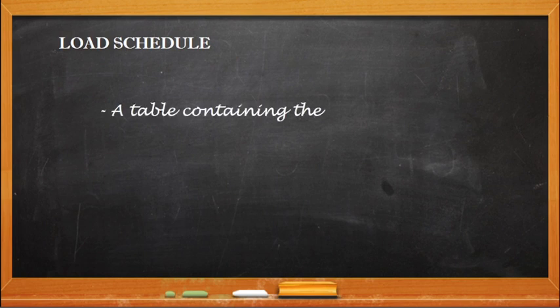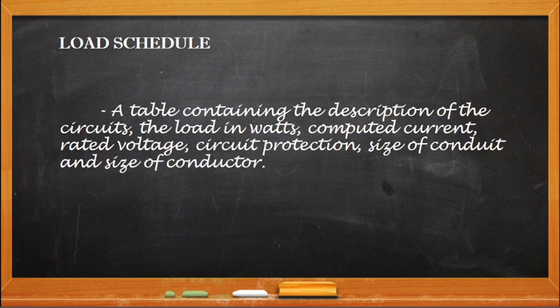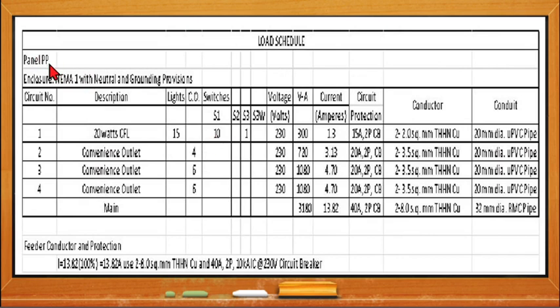Then we have the load schedule. The load schedule is a table containing the description of the circuits and the load in watts, computed current, rated voltage, circuit protection, size of conduit, and size of conductor. For example, in panel PP (power panel) with NEMA 1 enclosure with neutral and grounding provisions: circuit 1 has 20-watt CFL lights, 15 pieces, with 10 single pole switches and 1 three-gang, at 230 volts, 300 volt-ampere, 300 watts, 1.3 amperes current, 15-ampere circuit protection, 2.0 square mm two-wire conductor, and 20 mm diameter UPVC pipe conduit.